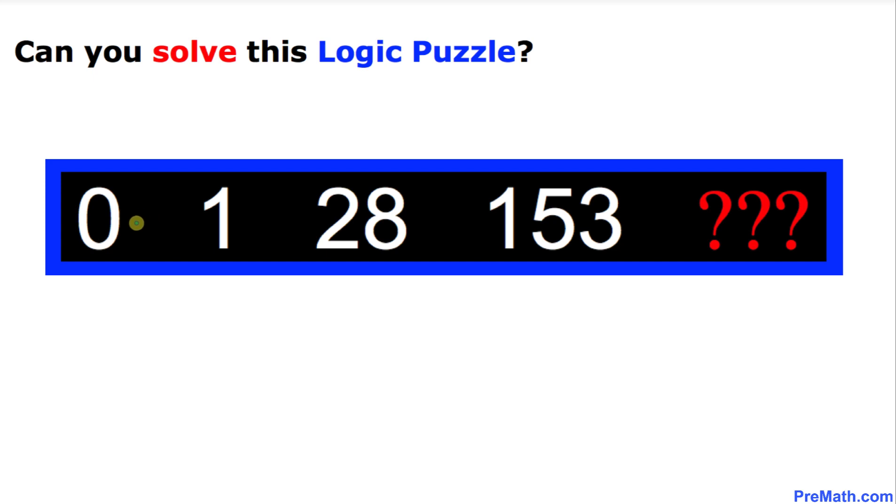This is actually a sequence. We got a number 0, 1, 28, 153. Now the question mark is what is going to be the number at this place.